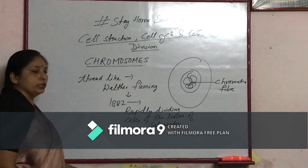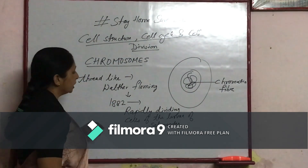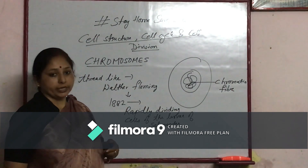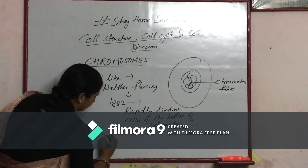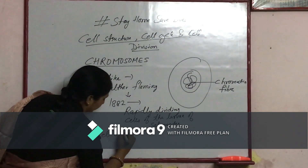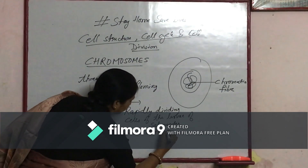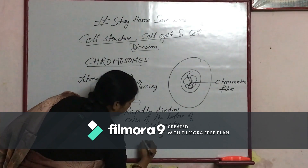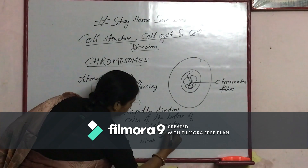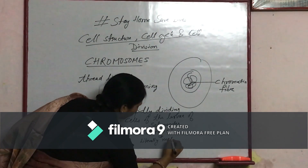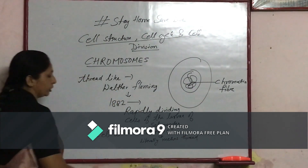Since he used a whole type of microscope to observe all this, it appeared to him as a thread-like or fine thread-like structure. So he named the cell division process mitosis, which literally means thread.